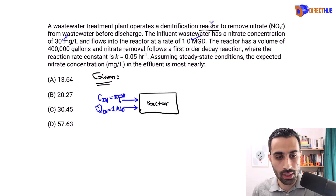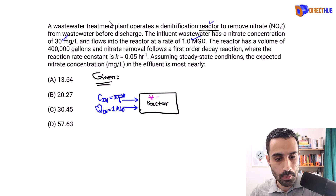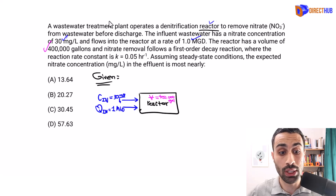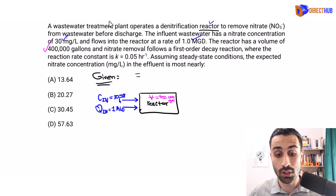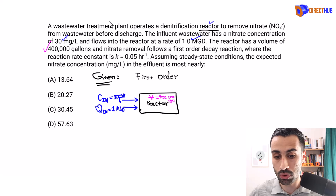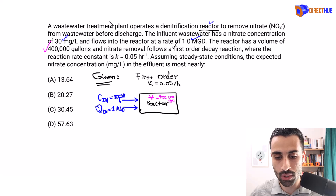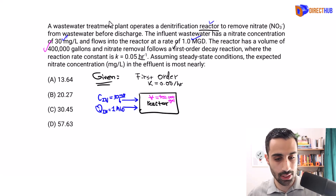The reactor has a volume of 400,000 gallons — that's the volume of the reactor. The reaction is first order, which is important as we'll see. We're given the K value: K = 0.05, and that would be per hour. Hour to the negative one is per hour.